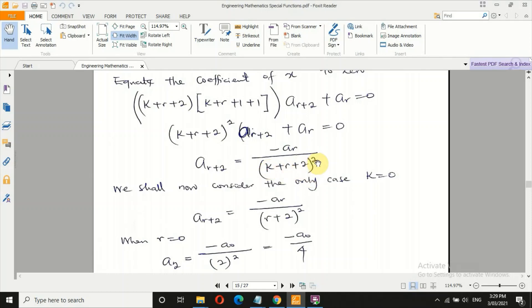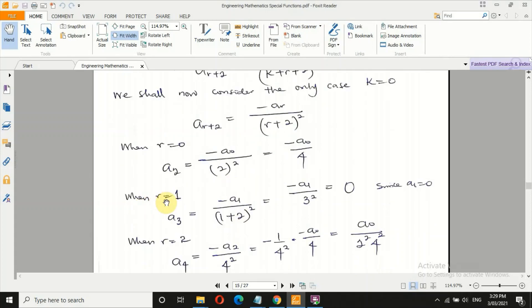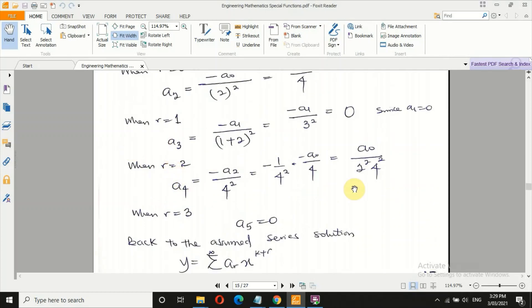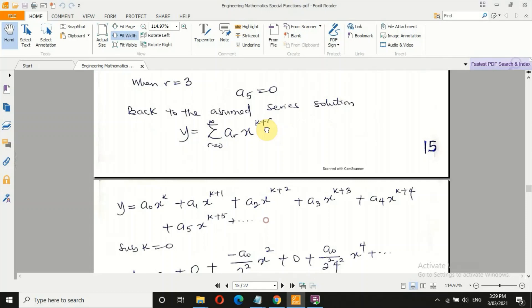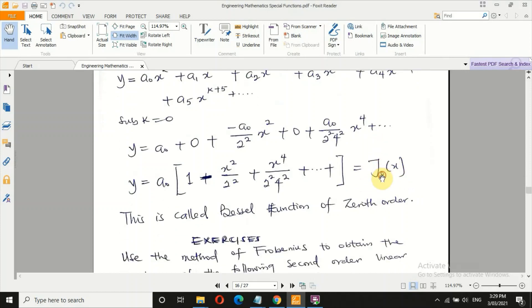When k is 0, we change this to 0. We now have r plus 2 equals minus a r. Let's focus on this. When r is 0, we have this. When r is 1, we obtain this. Don't forget that a1 is 0. When r is 2, we obtain this. When r is 3, we obtain this. Then we return everything back to our series solution. From this, we obtain this. If you remember the assignment I gave, the second assignment: by the time you assume that a naught is 1 over 2 raised to power n, the gamma of n plus 1, with that we will be able to convert everything to this function, which is j naught of 0, which is a Bessel function of 0th order.